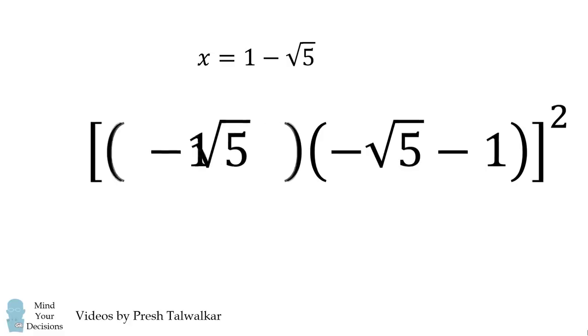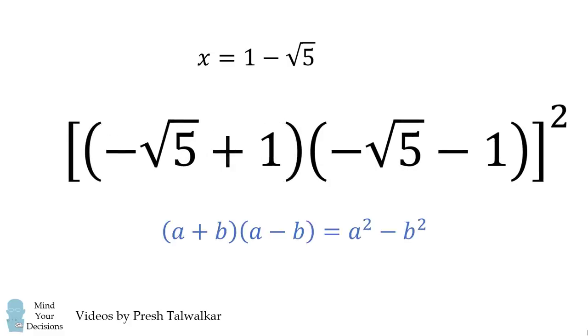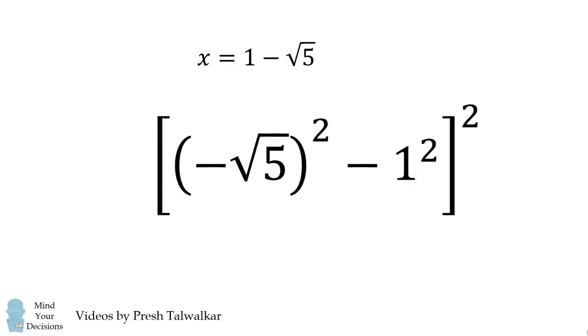We'll now flip the terms in the first factor. The reason we're doing this is that we get a product of a sum and a difference, which will be equal to a difference of squares. So this will be equal to negative square root of 5 squared minus 1 squared.